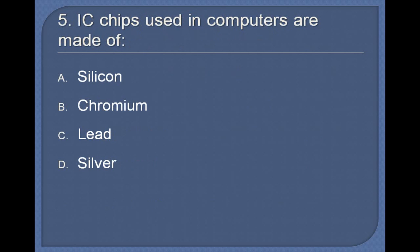5. IC chips used in computers are made of: Silicon, Chromium, Lead, Silver. Answer: Silicon.